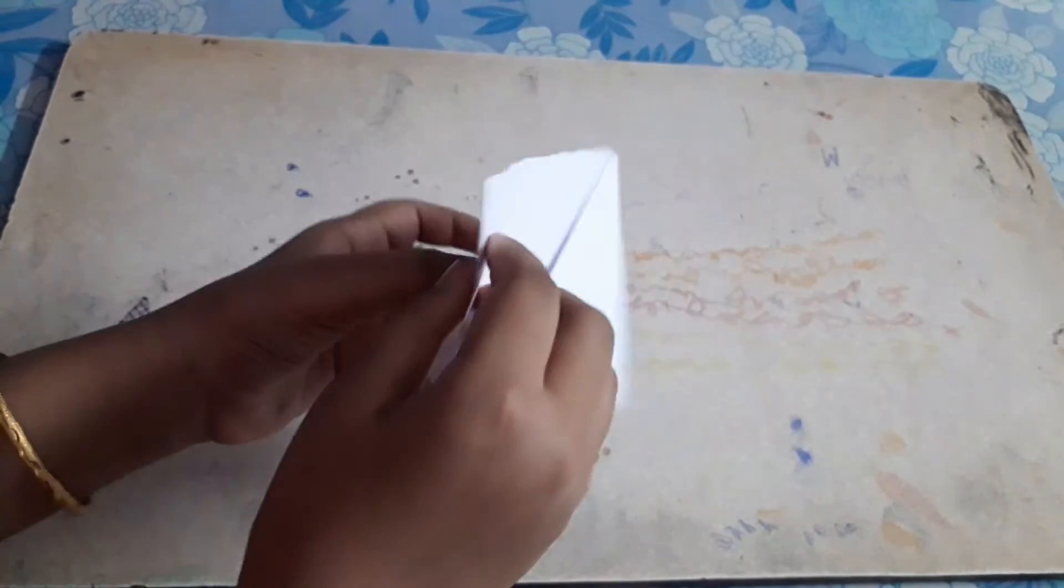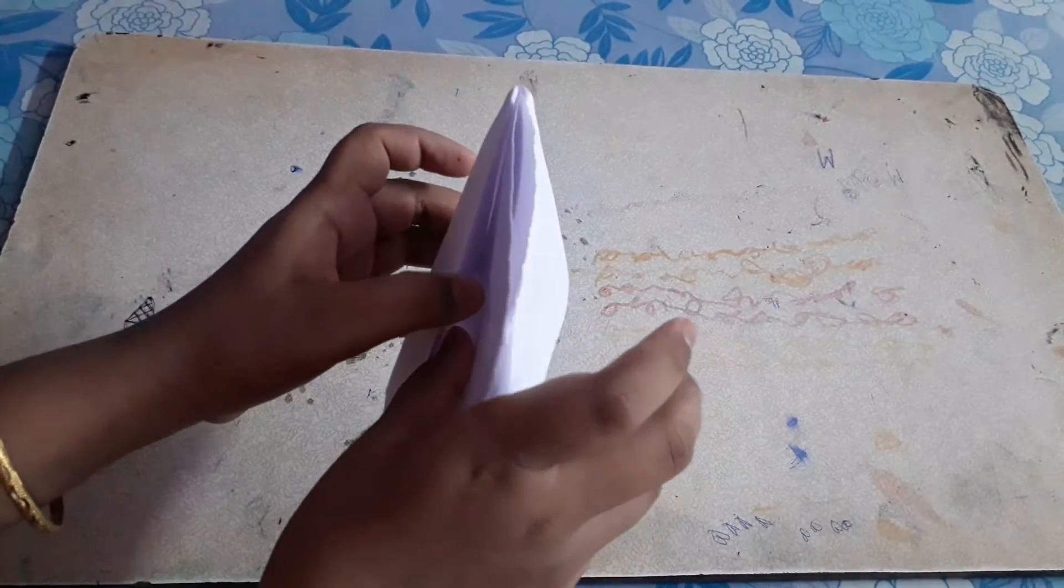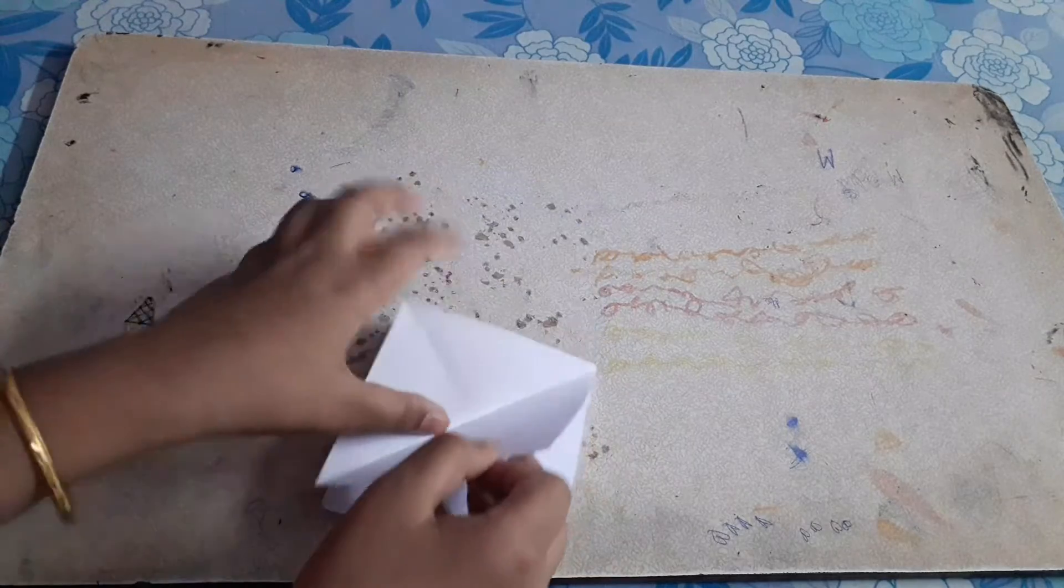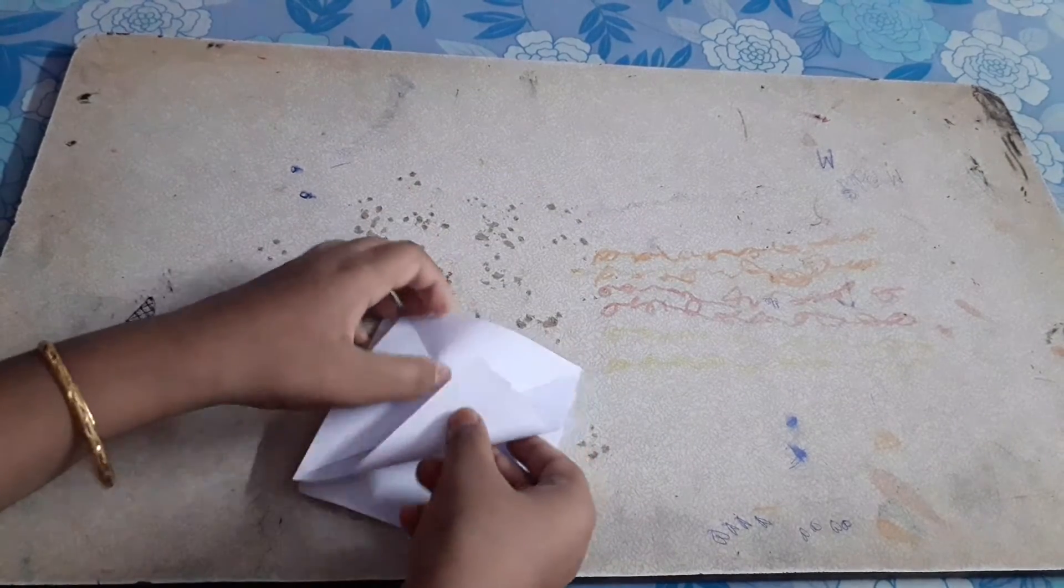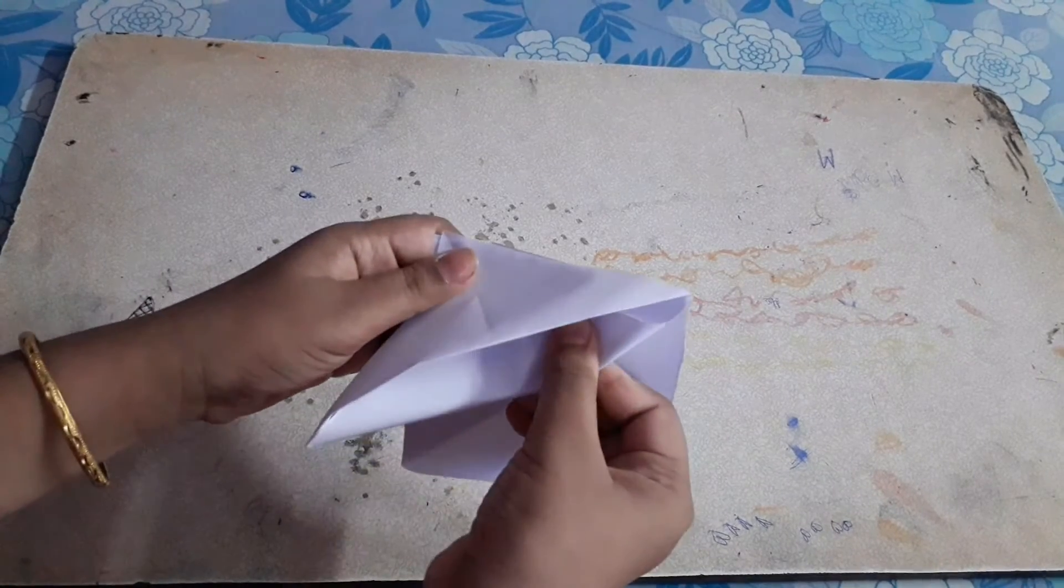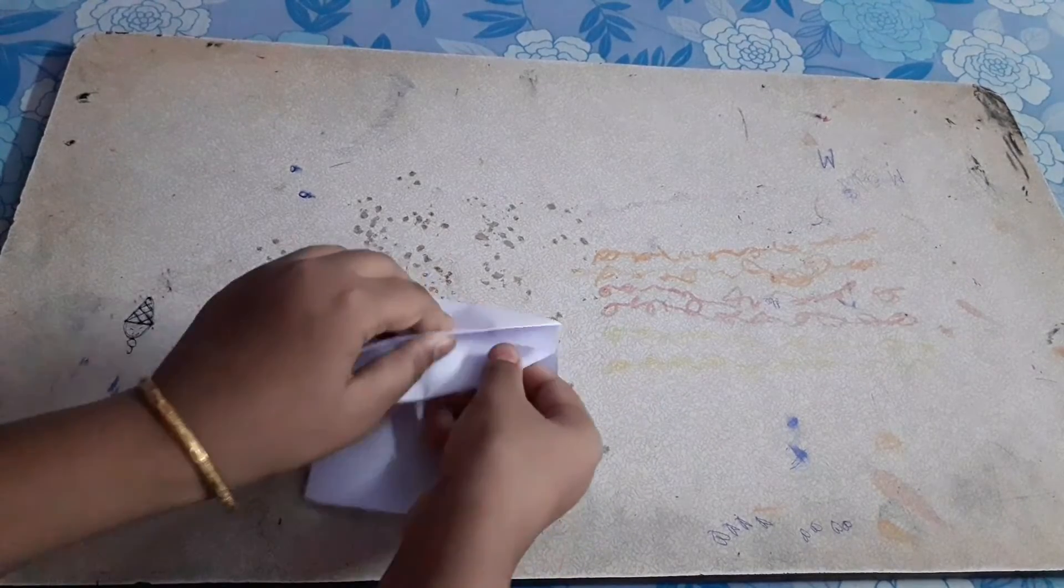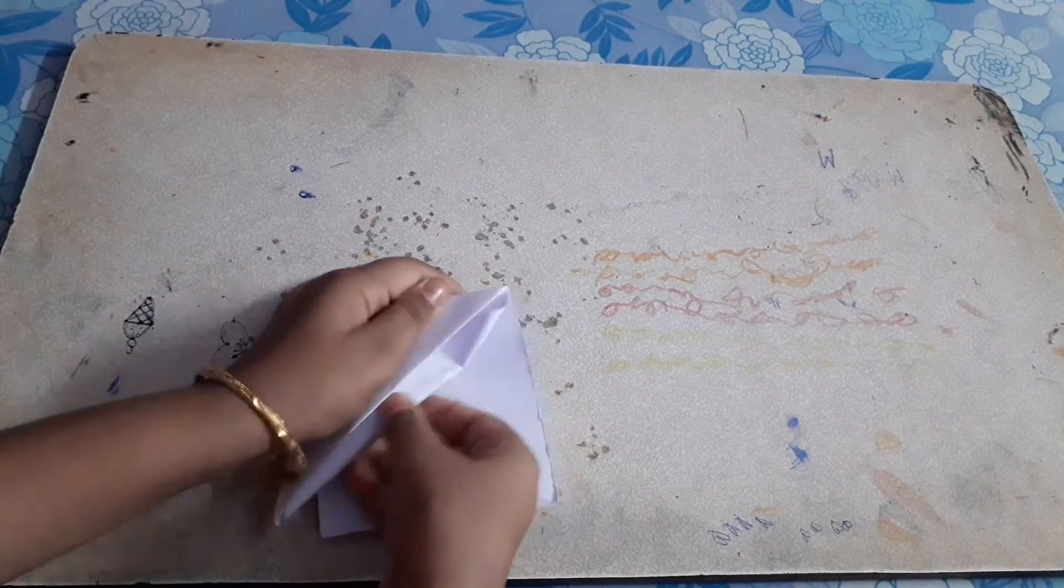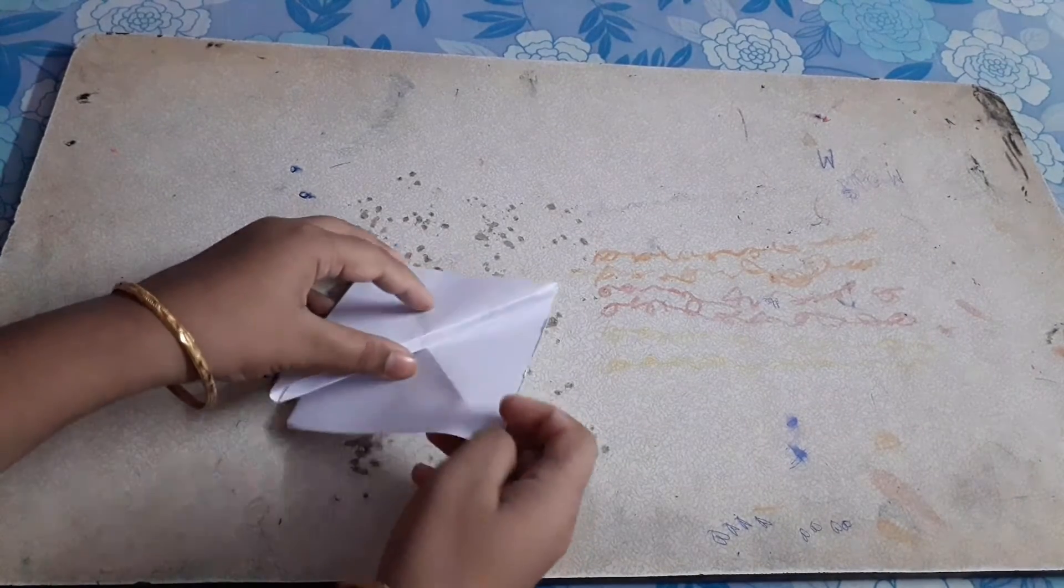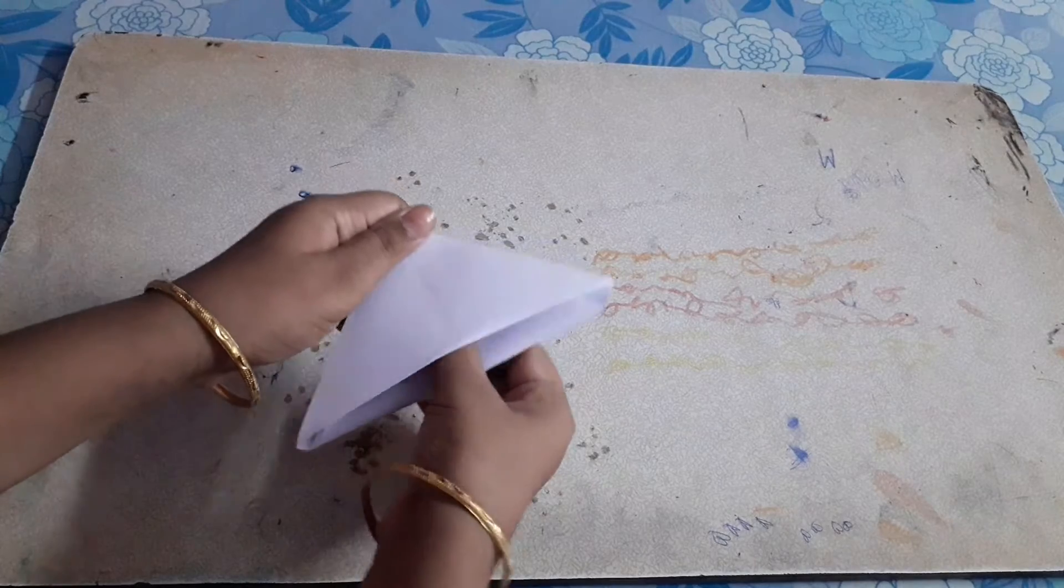Here you have to put the both remaining two flaps into one only, so it is a bit tricky. First you take one flap and put it in any pocket, means any flap you want. And take another flap also and fold it like this into the same one.